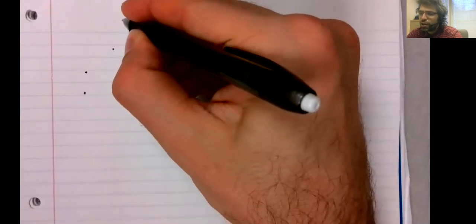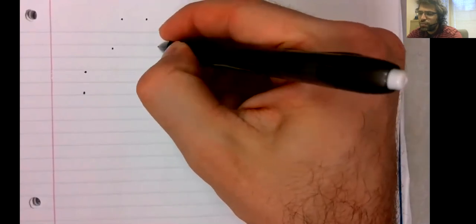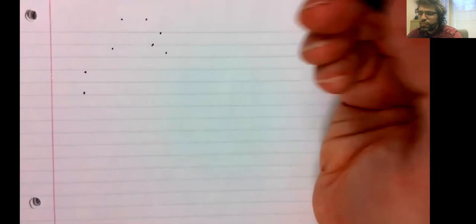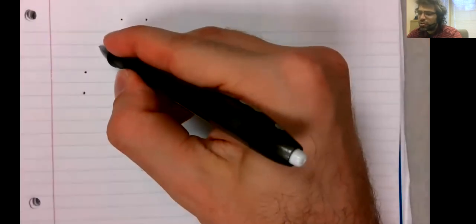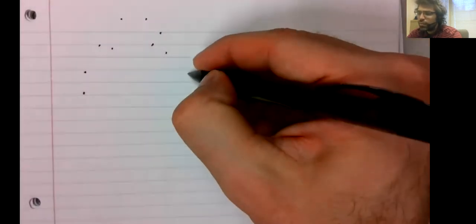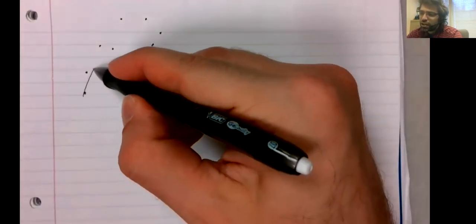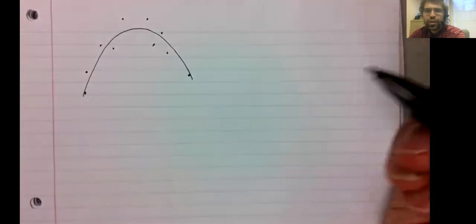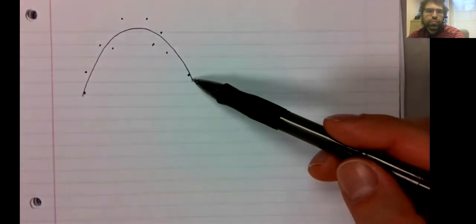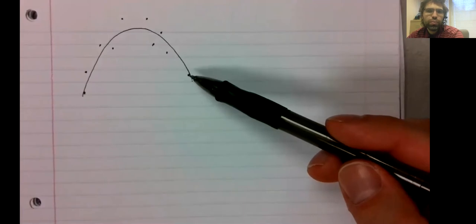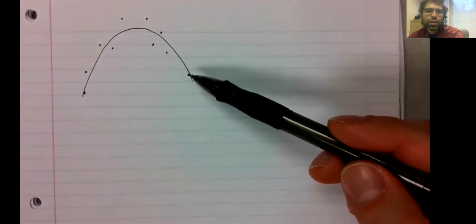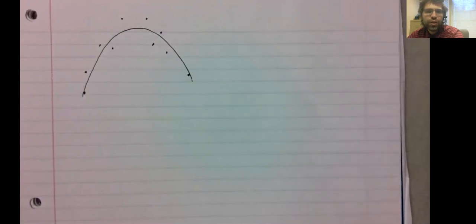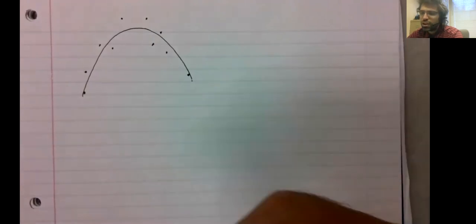Like maybe we have data that looks like this. And in shape, this data is more or less quadratic. But of course, there is no quadratic, no parabola that you can draw that is going to pass through all these points.